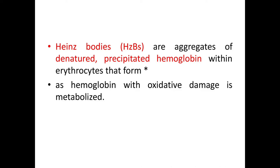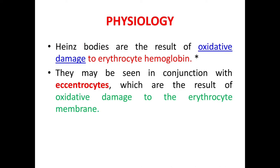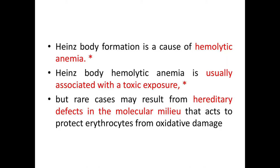Heinz bodies are the result of oxidative damage to erythrocyte hemoglobin and they may be seen in conjunction with exentrocytes. Exentrocytes are different — they are formed due to oxidative damage to the erythrocyte membrane, which is different from Heinz bodies formed by oxidative damage to erythrocyte hemoglobin. Heinz body formation is a cause of hemolytic anemia, usually associated with two reasons: toxic exposure, or rare hereditary defects in mechanisms that protect erythrocytes from oxidative damage.